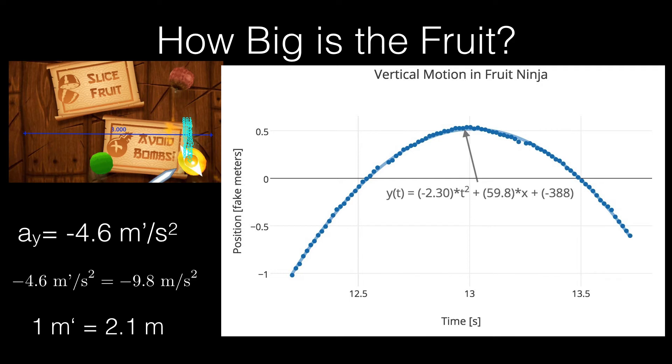And then I can go through and mark the location. Here's a vertical motion for one of the objects. And I can find the acceleration. If you look back at the kinematic equation, the term in front of the t squared is one half the acceleration. So I have this negative 2.3. So the acceleration would be twice that. So it's negative 4.6 fake meters per second squared.